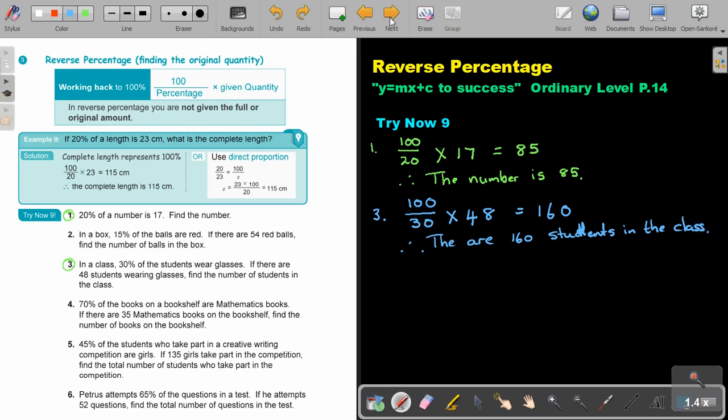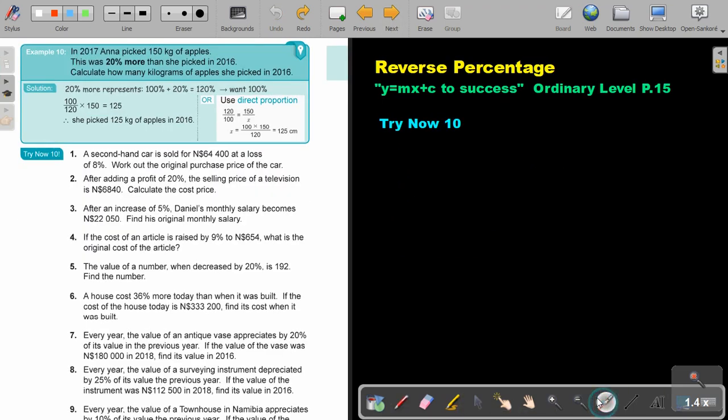Okay, let's look at a little bit more advanced examples. Now if I look at this one, I say in 2017, Anna picked 150 kilogram of apples. This was 20% more than she picked in 2016. Calculate how many kilograms of apples she picked in 2016. It's all about that more. So actually it was 20 plus the original full amount, 100. So it was 120%. That is equal to that 150. So if I want the full amount, the previous amount, I say 100 over 120, multiply 150 and I will get 125. She picked 125 kilogram of apples in 2016.